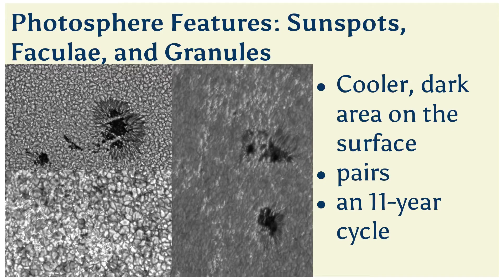There are also features called faculae — bright areas seen mostly near the edge of the solar disk, also associated with magnetic fields. Granules are small, relatively about 1,000 kilometers across — cell-like features that cover the entire surface of the sun except for areas covered by sunspots.